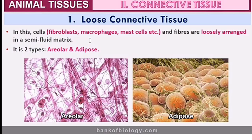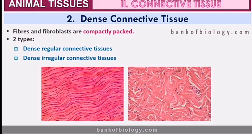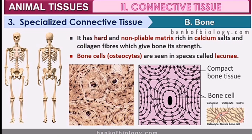Connective tissue types are: loose connective tissue, dense connective tissue, and specialized connective tissue. Loose connective tissues are loosely joined — for example, areolar and adipose tissues. Dense connective tissues have fibroblasts that are very tightly packed, and these come in two forms: dense regular connective tissue, where layers are equally packed, and dense irregular connective tissue, which is packed in irregular patterns.